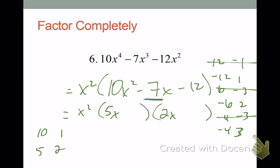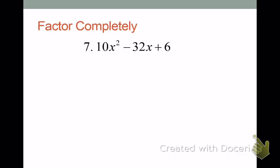We ended up using one of the factor pairs I crossed out when trying the shortcuts — so don't ever automatically assume it's not going to work. It's just more likely. Our smiles connect the factors: the 5 gets connected to the minus 3, and the 2 gets connected to the 4, and we're done. These shortcuts are rules of thumb, not absolutes. It's not definitely how this stuff is going to work out every time. They're just little things to give us a direction to make things a little easier.